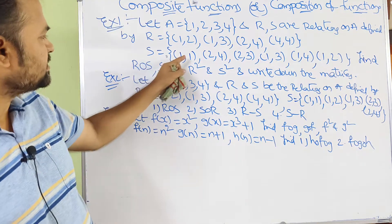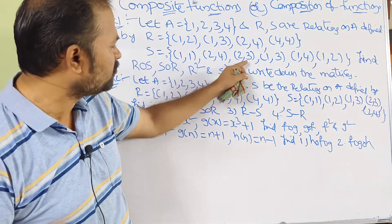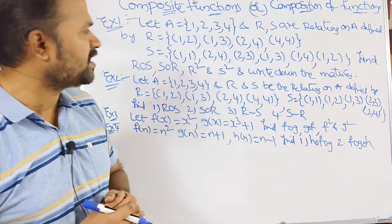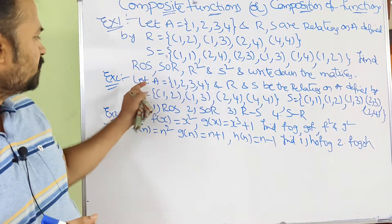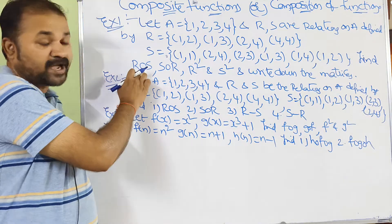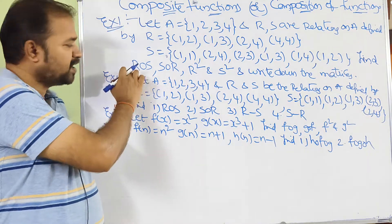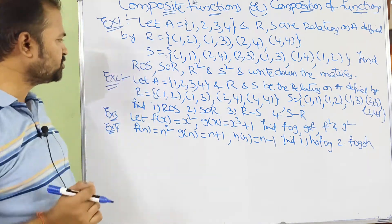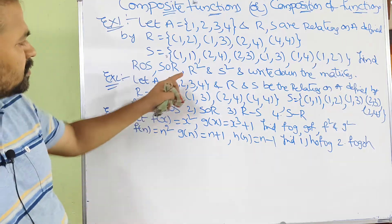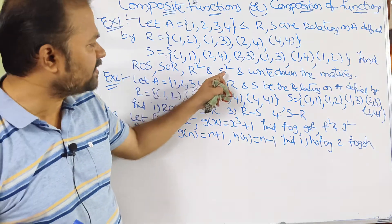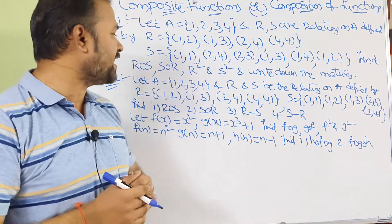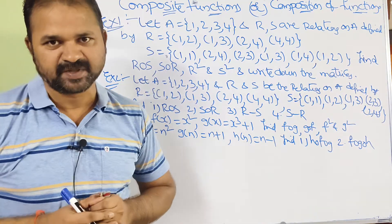S is equal to (1,1), (2,4), (2,3), (1,3), (1,4), (1,2). Find R∘S, S∘R, R² and S², and write down the matrices for all these things.